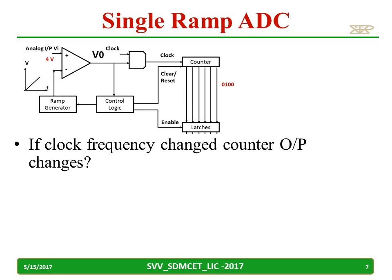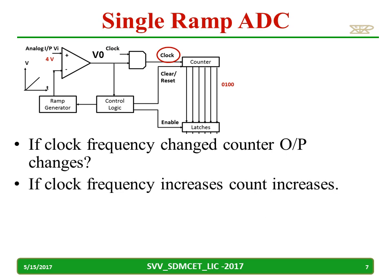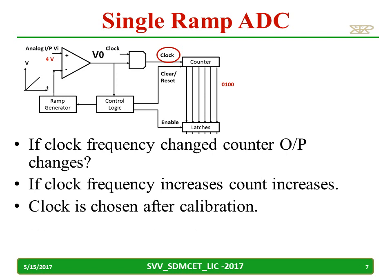If the clock frequency changes, is it going to affect the counter output? If the clock frequency increases, the time required for the ramp generator to reach 4 volts will remain the same. However, if we increase the clock, the counter output will also increase — the count will increase. Hence, the clock is usually chosen after proper calibration.